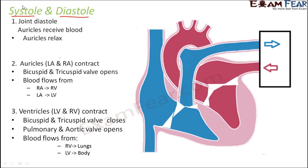Whenever we use the term systole it is for contraction, and whenever we use the term diastole it is for relaxation. When the auricles contract it is called auricular systole; when the ventricles contract it is called ventricular systole; when the auricles relax it is called auricular diastole; and when the ventricles relax it is called ventricular diastole.